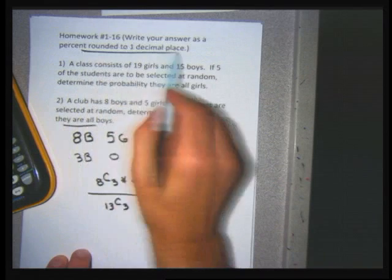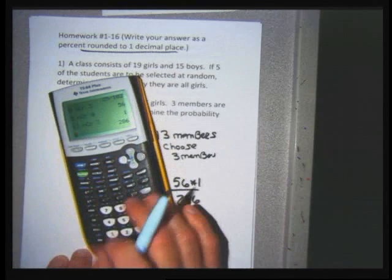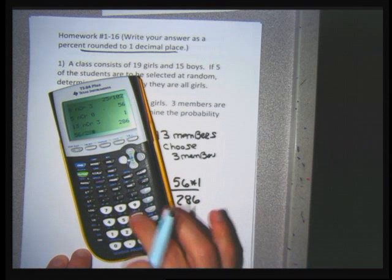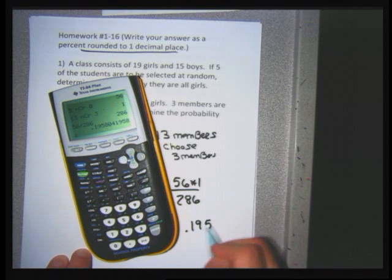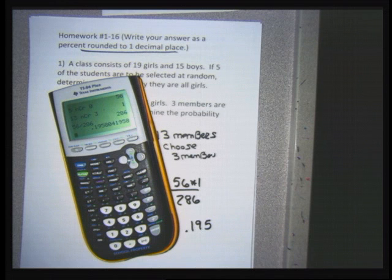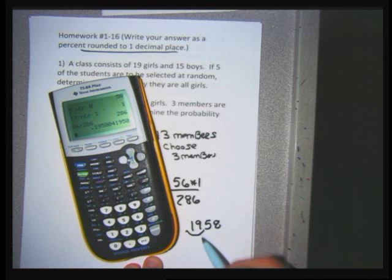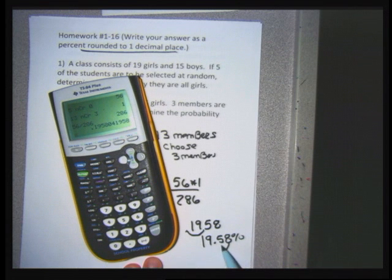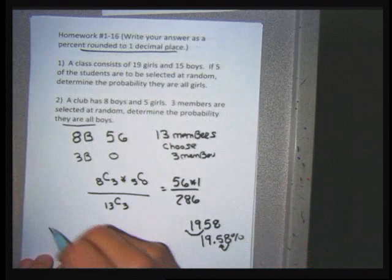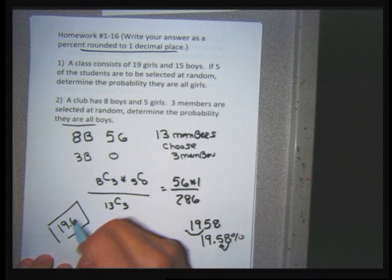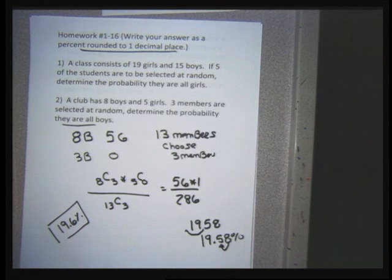The instructions say to write the answer as a percent rounded to one decimal place. Moving the decimal over twice gives 19.58%, and the eight rounds the five up to a six, giving 19.6%. If you gave me a fraction answer I'd give you full credit.